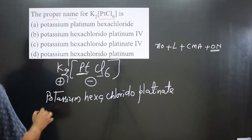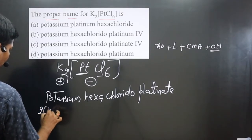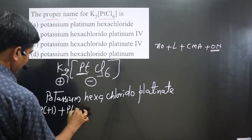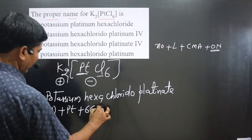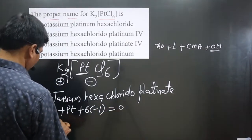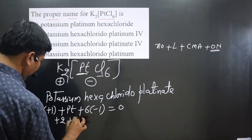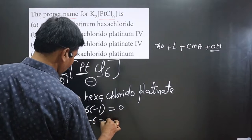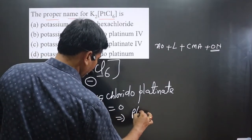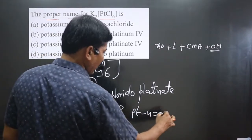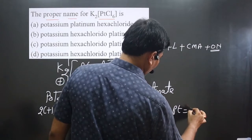Then in the last we have oxidation number. Let's calculate: potassium is +1, then we have platinum, and then six halogens, halogen is -1, equals zero. So +2 and platinum minus 6 equals zero. Then we get platinum minus 4 equals zero.